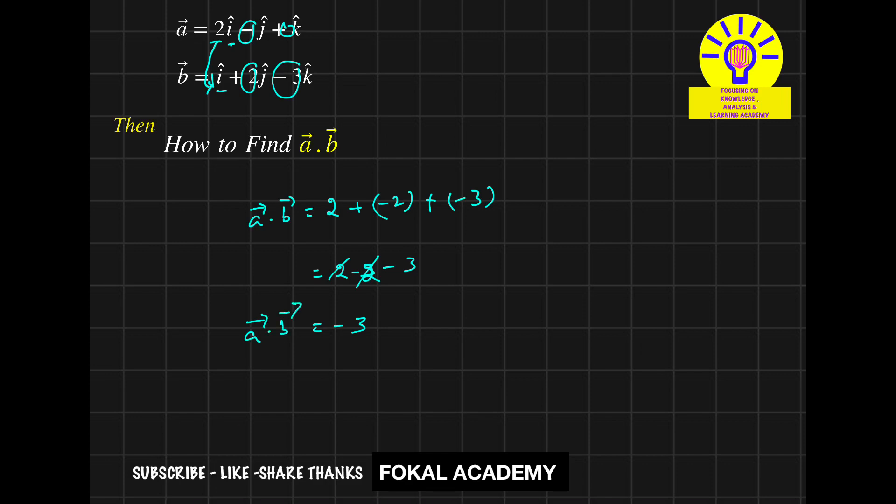So between any two vectors, the dot product results in one magnitude value. And this is the process of simplification.